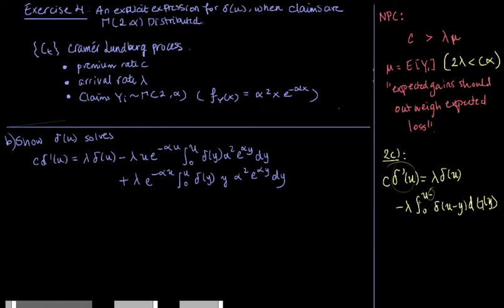And we can actually already see here that the lambda multiplied by delta u that we have in this result is in this part of the equation. So, the only thing that we really need to show is that this part is equal to this part.